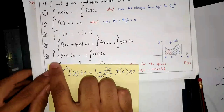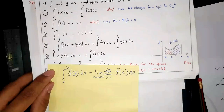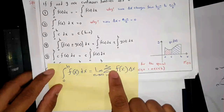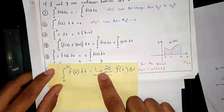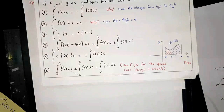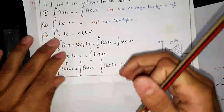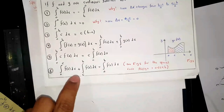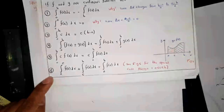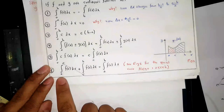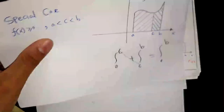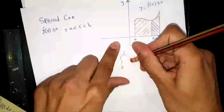Property 6 (additivity): ∫ₐᶜ f(x) dx + ∫ᶜᵦ f(x) dx = ∫ₐᵇ f(x) dx. Geometrically (for f ≥ 0), the red region from a to c plus the blue region from c to b equals the total area from a to b. Note: c need not lie between a and b — it can be outside the interval.